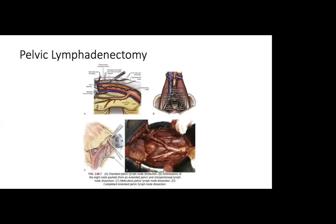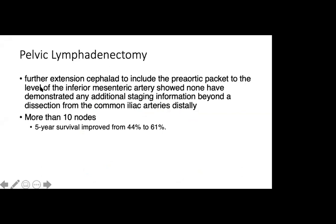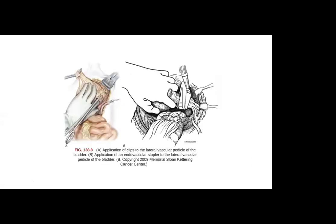For lymphadenopathy, the anatomic boundaries of a standard template dissection consist of the genitofemoral nerves laterally, the internal iliac medially, Cooper's ligament inferiorly, and the point at which the ureter crosses the common iliac artery superiorly. In cases of advanced disease, an extended dissection inclusive of the entire common iliac lymph node packet and the presacral lymph node packet can be obtained. Further extension to include the pre-aortic packet to the level of the inferior mesenteric artery has shown no additional staging information beyond dissection of the common iliac artery. For dissected nodes more than five, five-year survival improved from 44 to 66%.